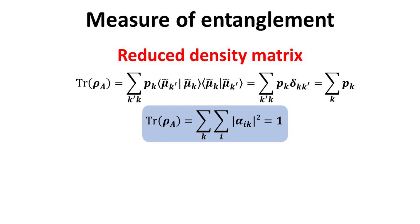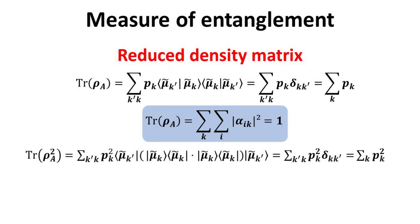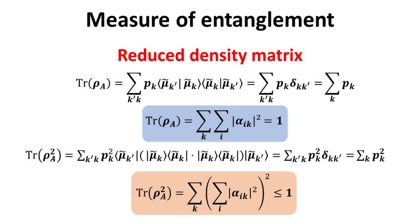If the composite density matrix rho is normalized, the reduced density matrix rho_A will also be normalized. Next, we examine the trace of the square of rho_A. One can show that this trace is given by the sum of all p_k squared. Feel free to pause here to inspect the math. Since the sum of modulus squares of the alpha coefficients equals one, the additional squaring causes it to be less than unity. To summarize: the trace of rho_A equals one, and the trace of rho_A squared is always less than or equal to one. As we will show, the latter can be used as a convenient measure of the degree of entanglement.